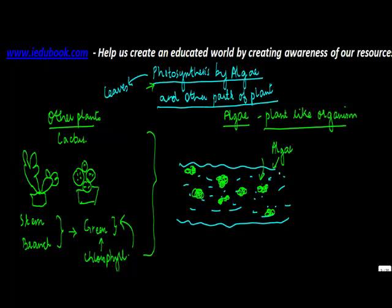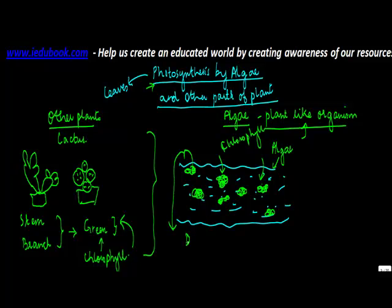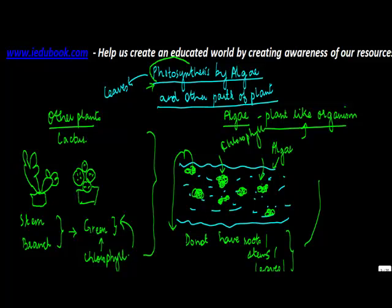These algae, even though they are not actually plants, are plant-like organisms that produce food using photosynthesis, because the green color they have is nothing but chlorophyll. But if you pull one of them out, they are different from plants because unlike plants they do not have roots or stems. They don't have roots, they don't have stems, they don't have any of those parts, but they are still able to carry out the process of photosynthesis due to the presence of chlorophyll within them.